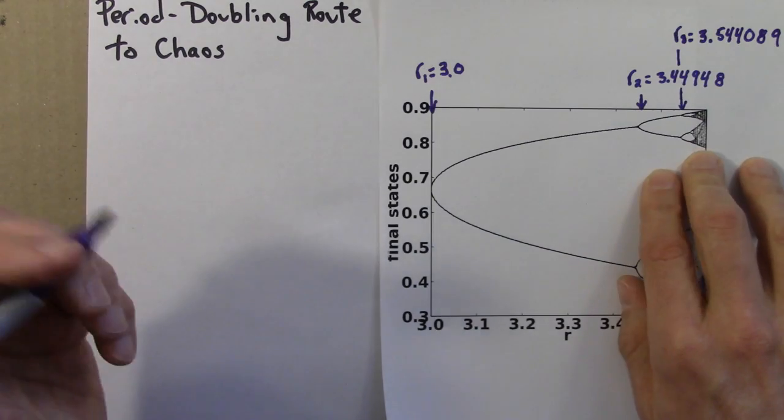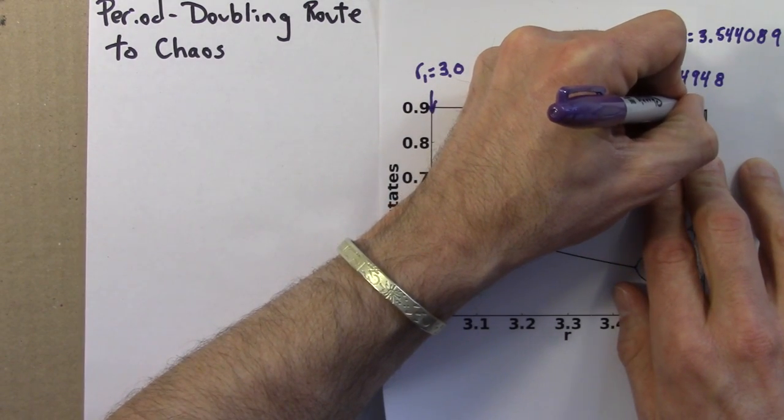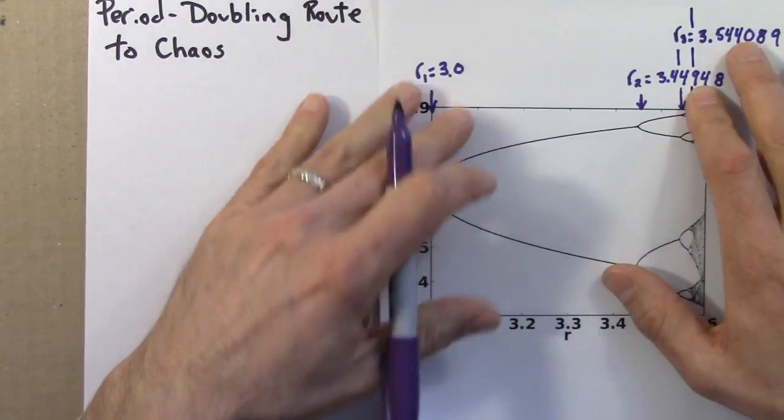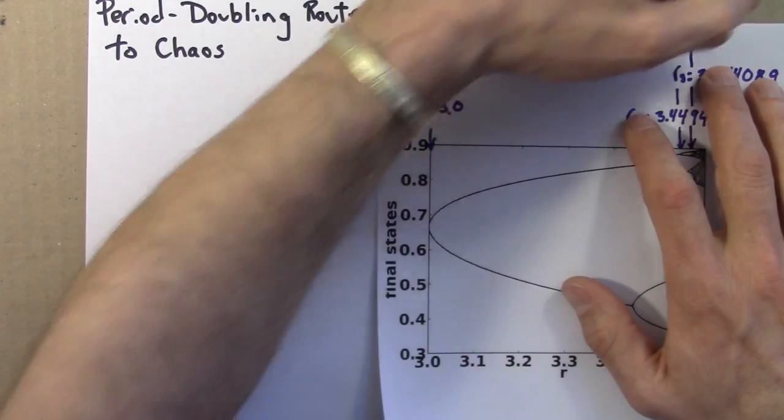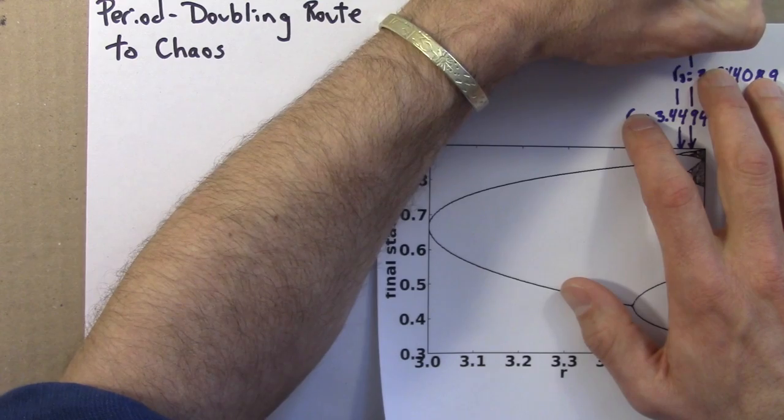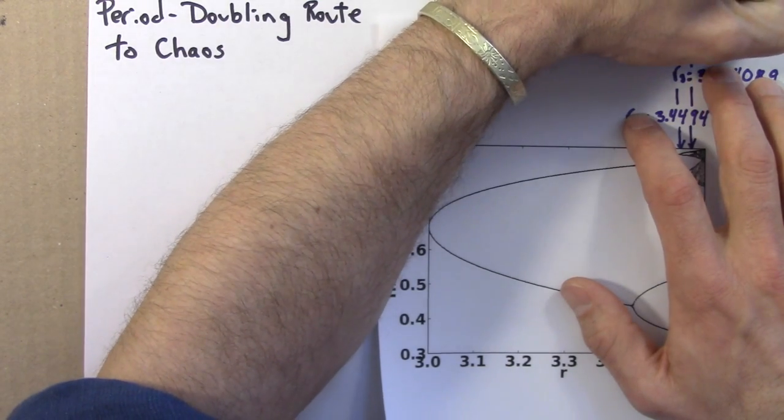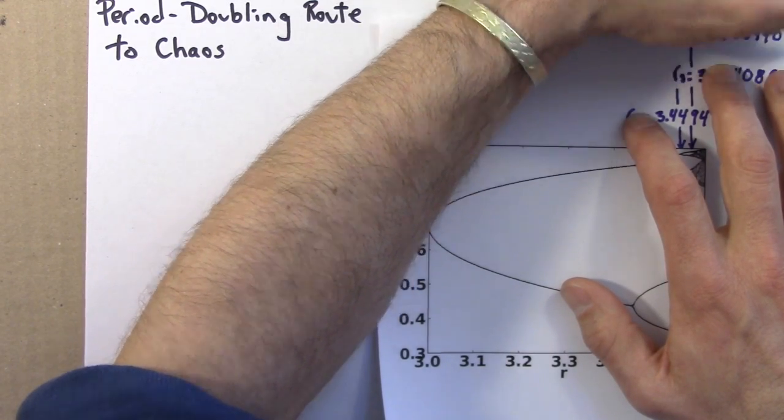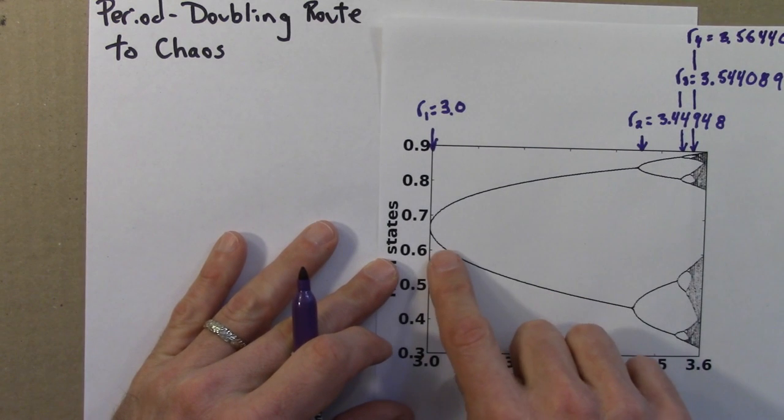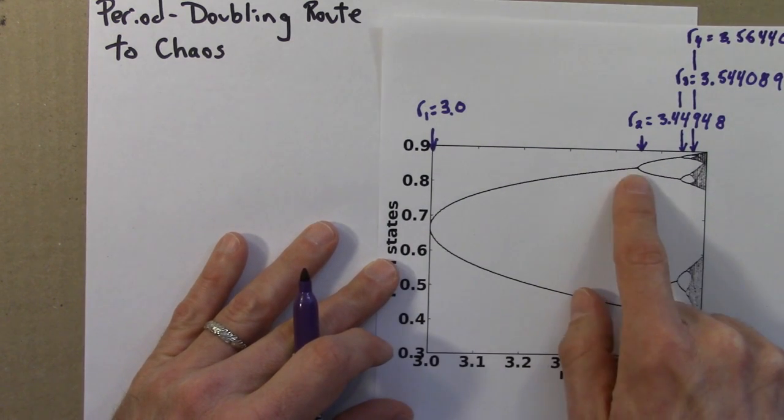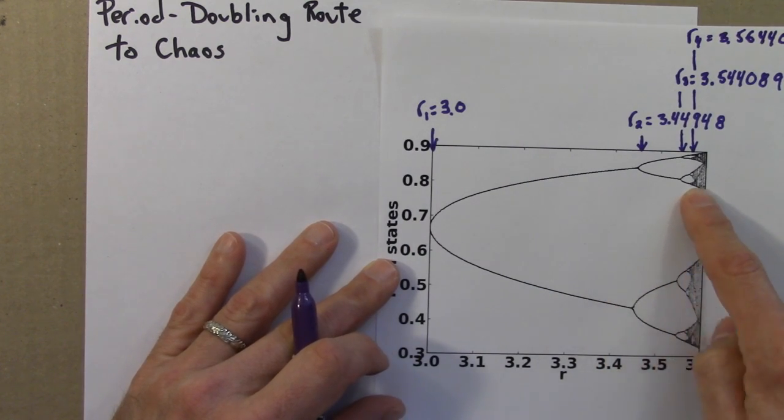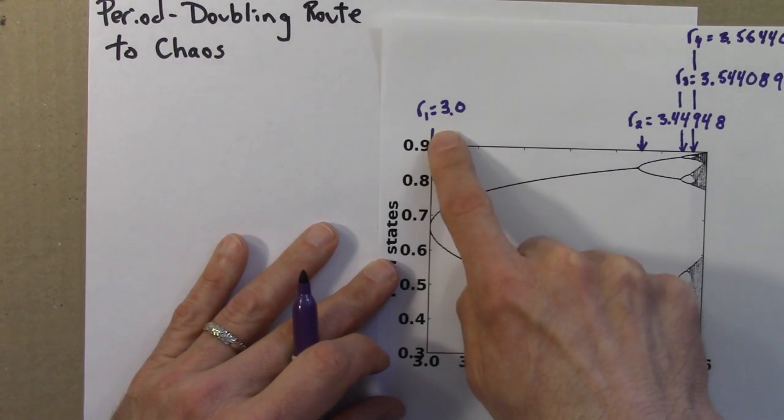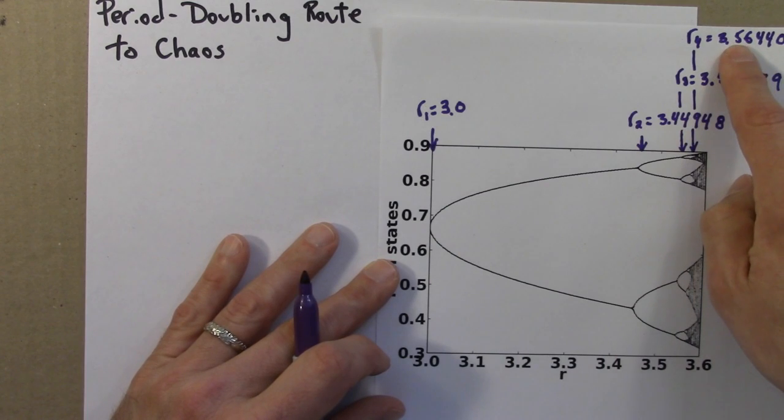And then lastly, there's a transition from period 8 to 16. And that's really hard to see on this diagram. We'll have to zoom in a lot. But if we did, we would find that that transition occurs where R is about 3.564407. So we have four bifurcations from period 1 to 2, 2 to 4, 4 to 8, and 8 to 16. And they occur approximately at these R values. And I'll call the first R value R1, and then R2, R3, and R4.